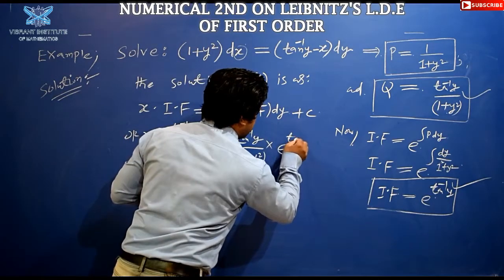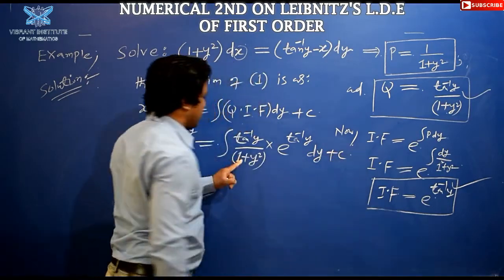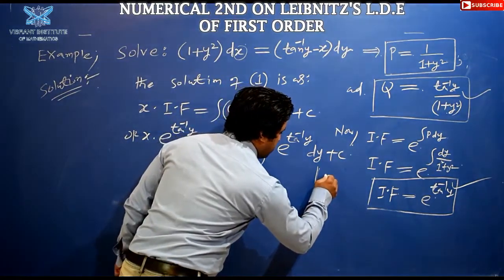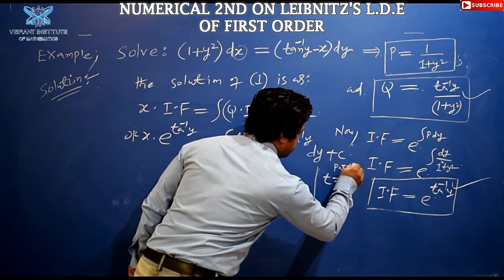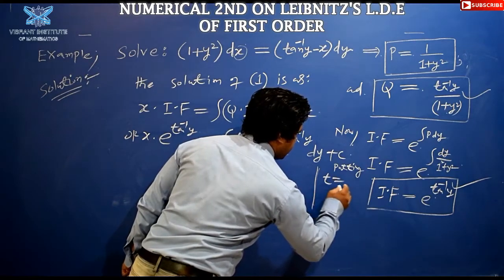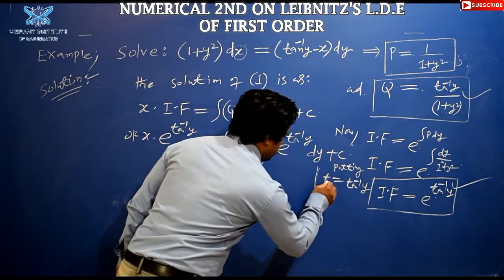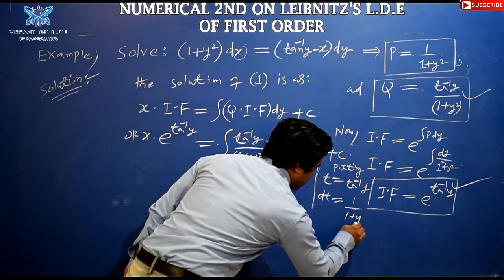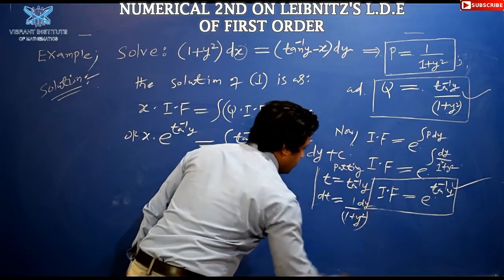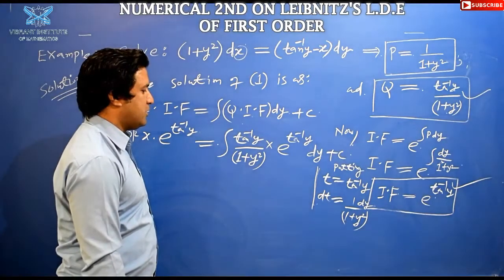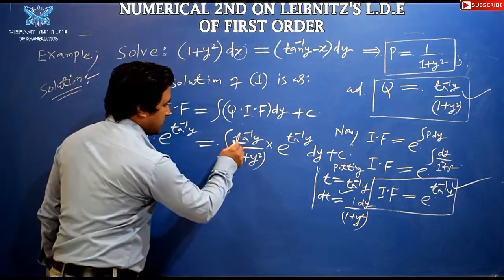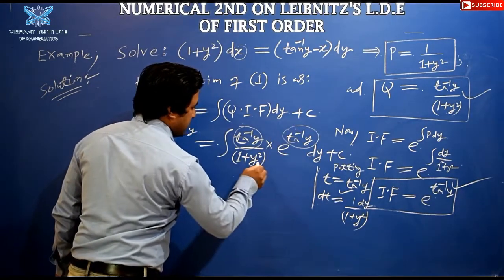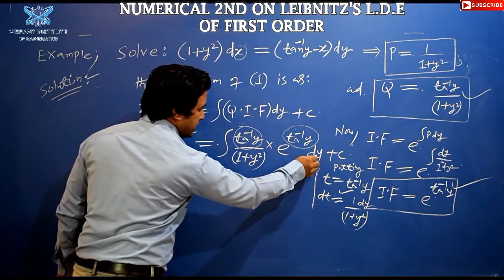We solve this integral by substitution. Let t = tan⁻¹y. Then dt = dy/(1 + y²). So the term [1/(1 + y²)] dy = dt. The integral becomes ∫ t · eᵗ dt.